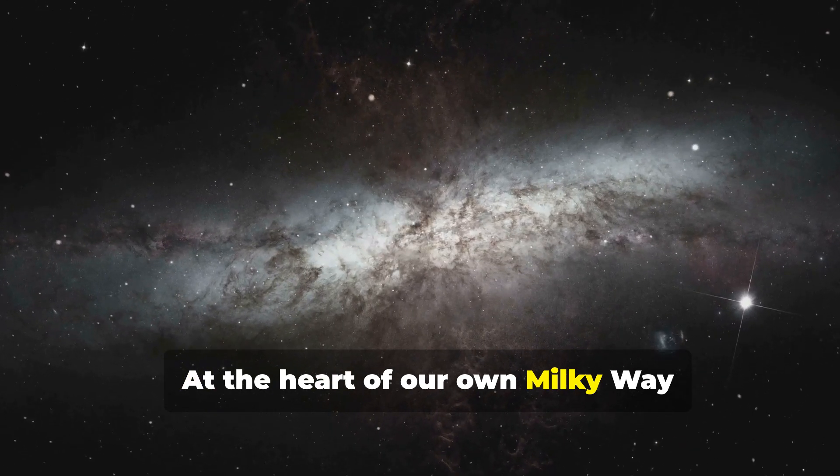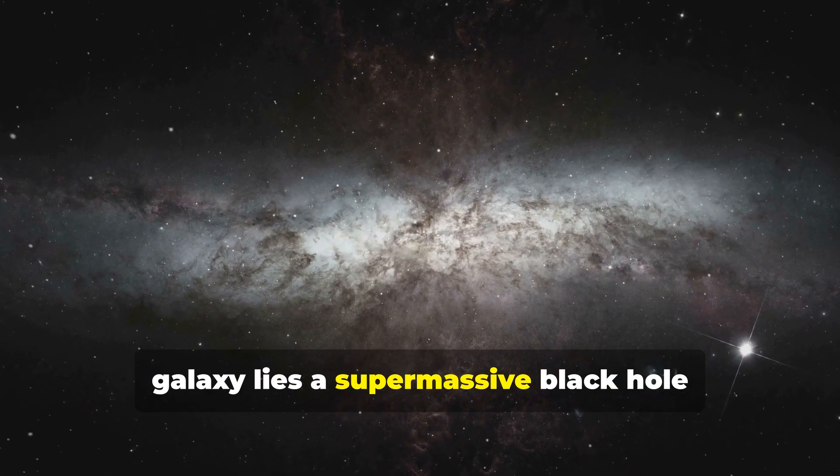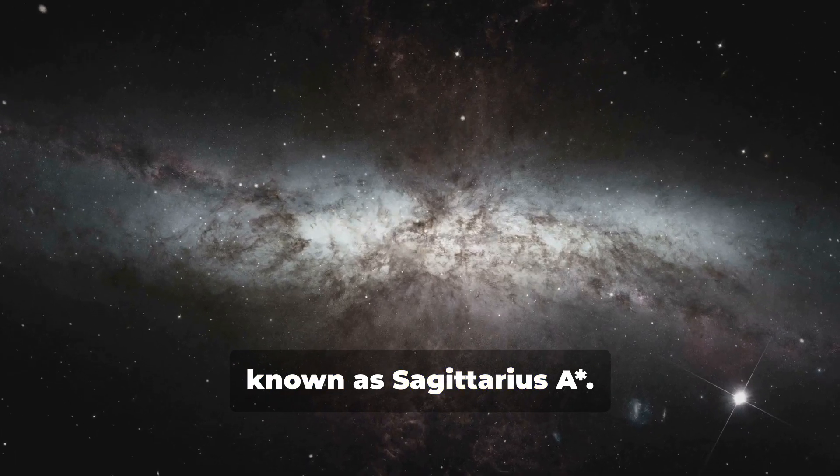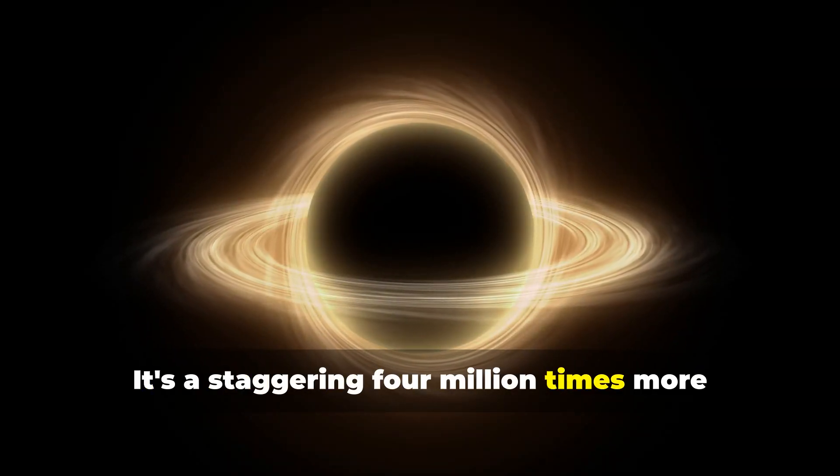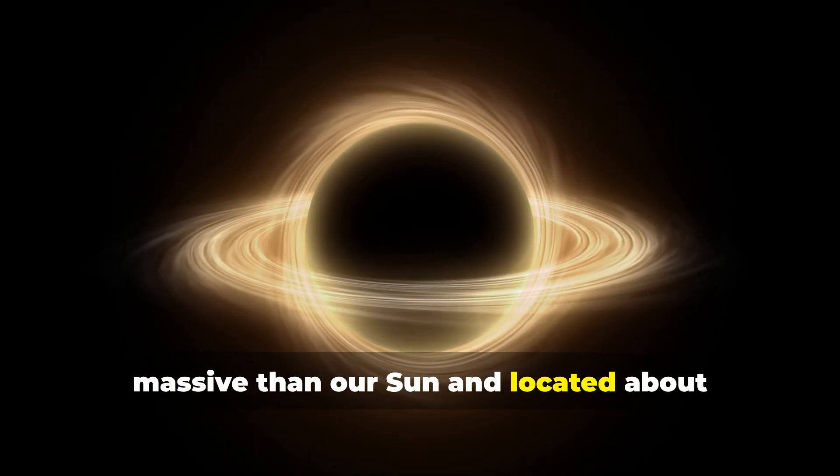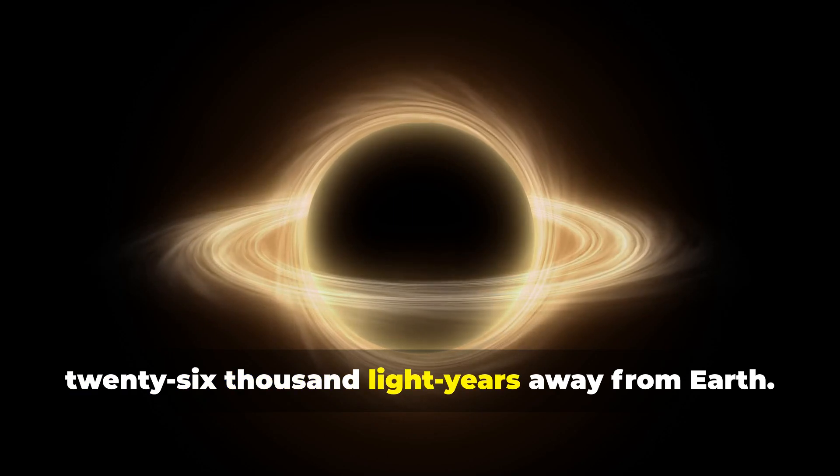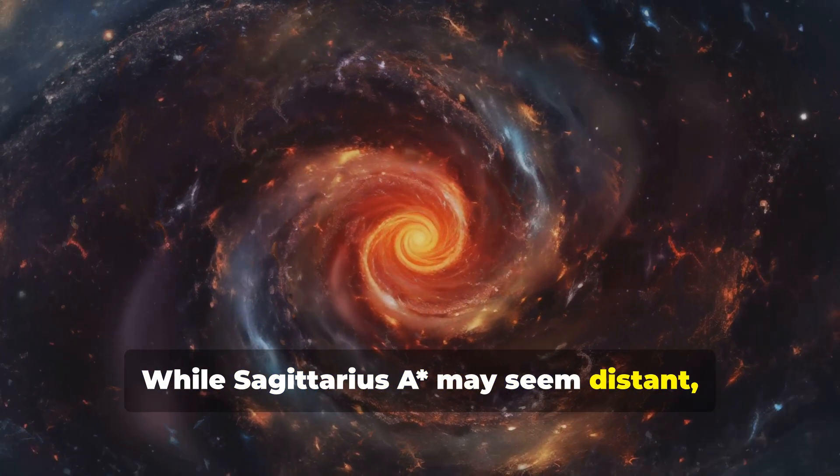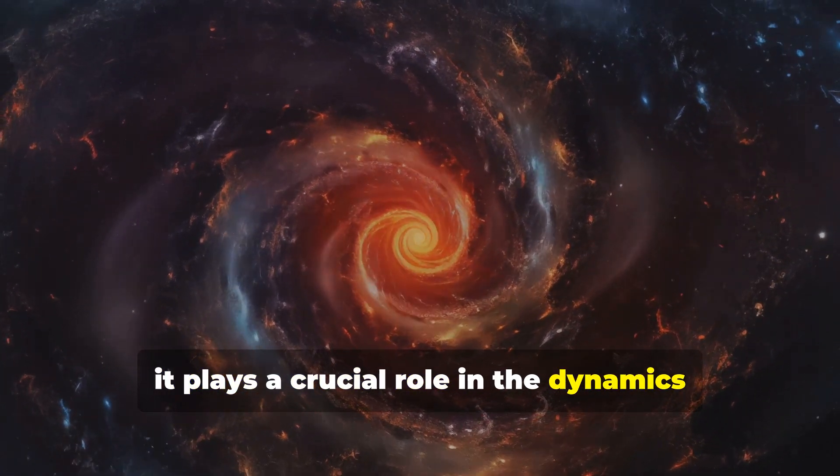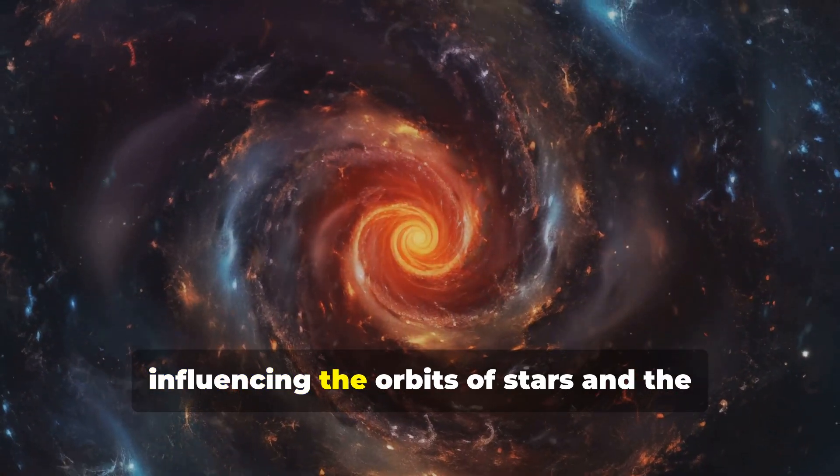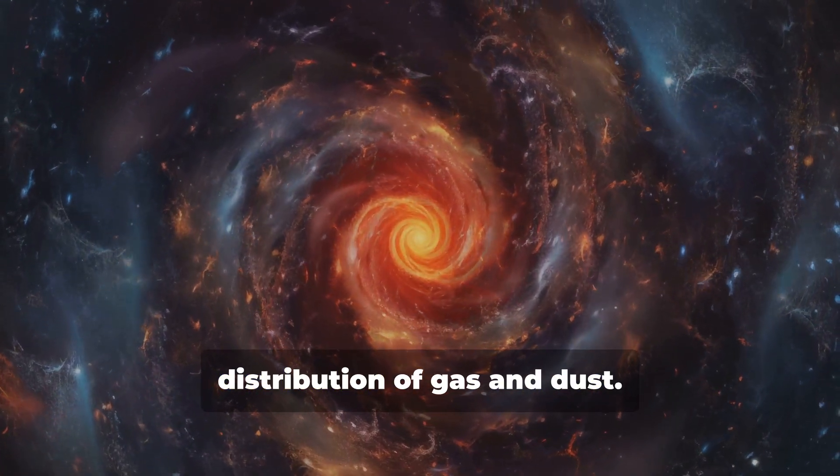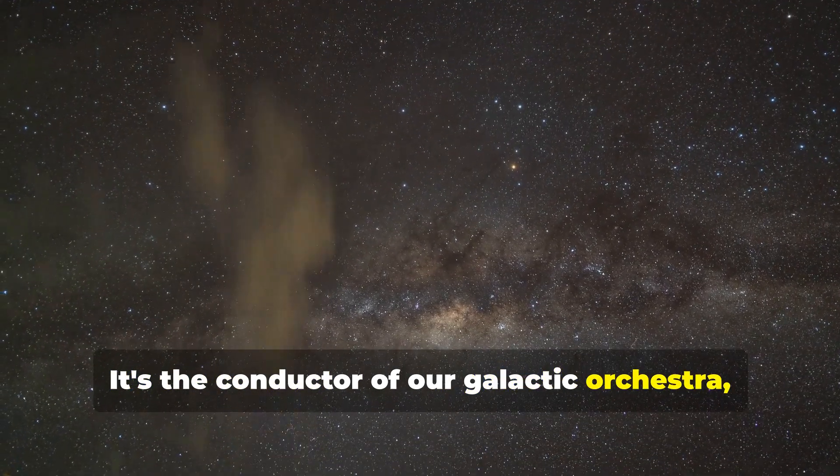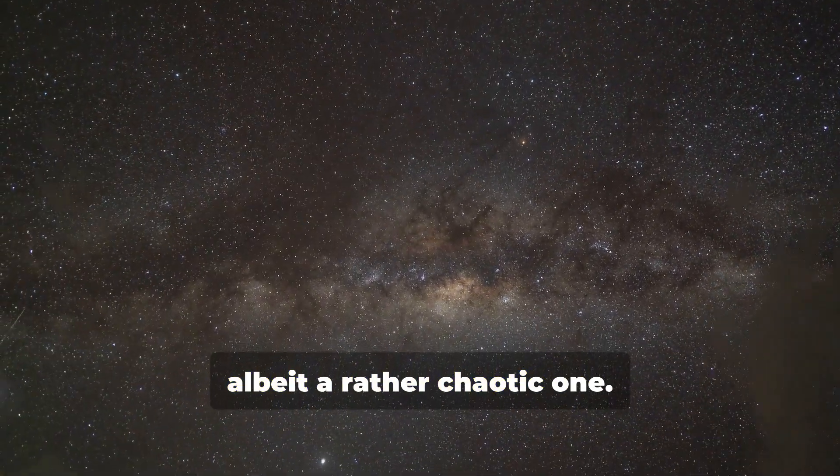At the heart of our own Milky Way galaxy lies a supermassive black hole known as Sagittarius A asterisk. It's a staggering 4 million times more massive than our Sun and located about 26,000 light-years away from Earth. While Sagittarius A asterisk may seem distant, it plays a crucial role in the dynamics of our galaxy, influencing the orbits of stars and the distribution of gas and dust. It's the conductor of our galactic orchestra, albeit a rather chaotic one.